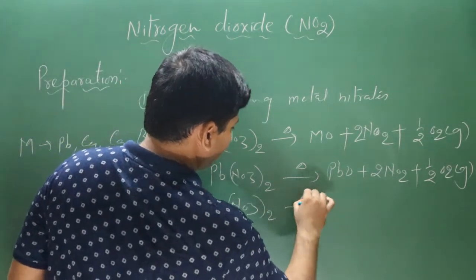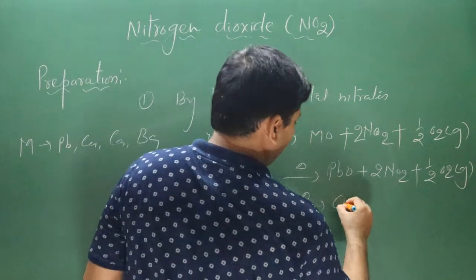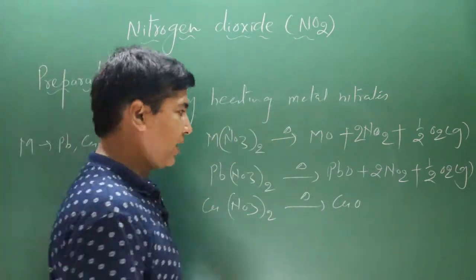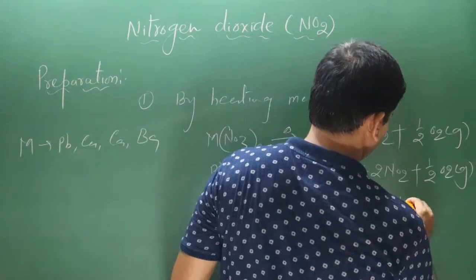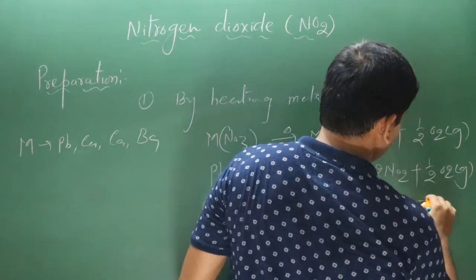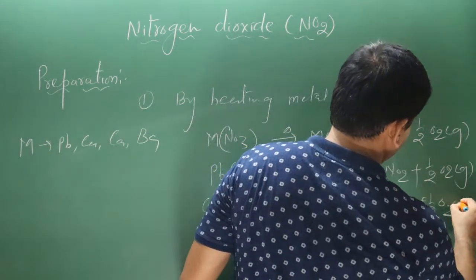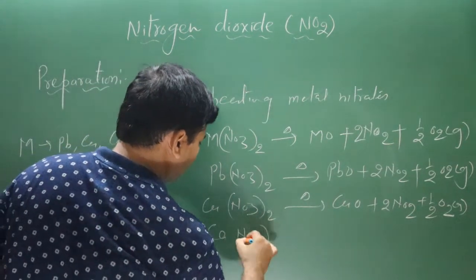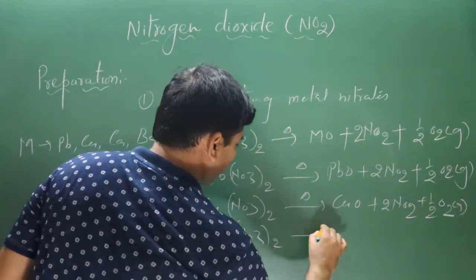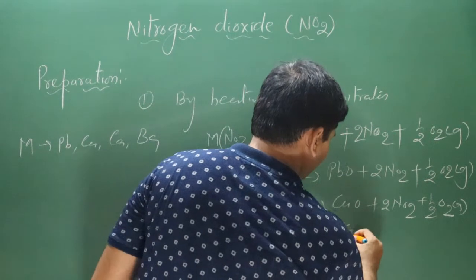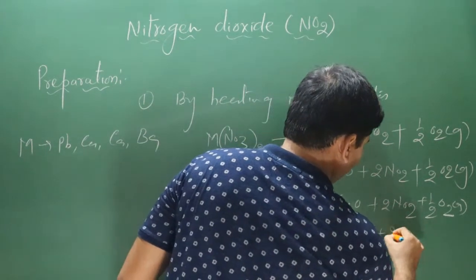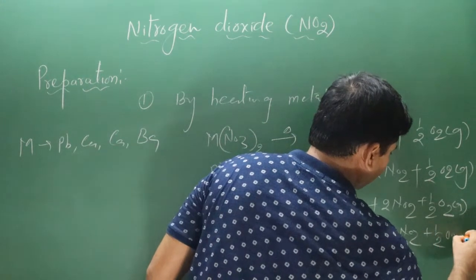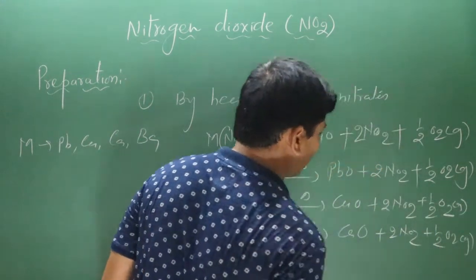If we take copper nitrate, we get copper oxide (cupric oxide), two molecules of nitrogen dioxide, and oxygen gas. Similarly, calcium nitrate on heating decomposes to produce calcium oxide, two molecules of nitrogen dioxide, and oxygen gas.